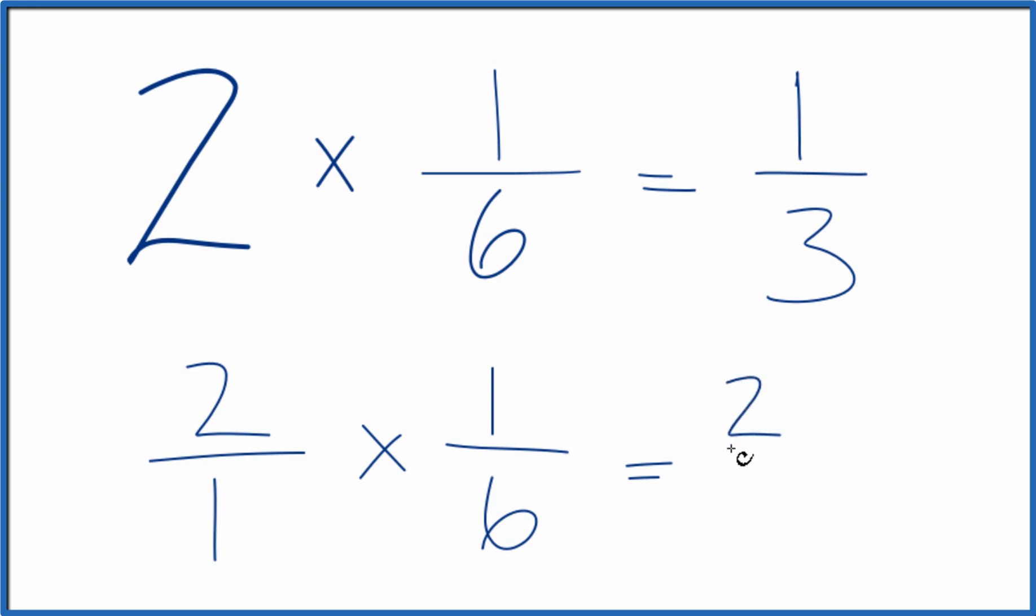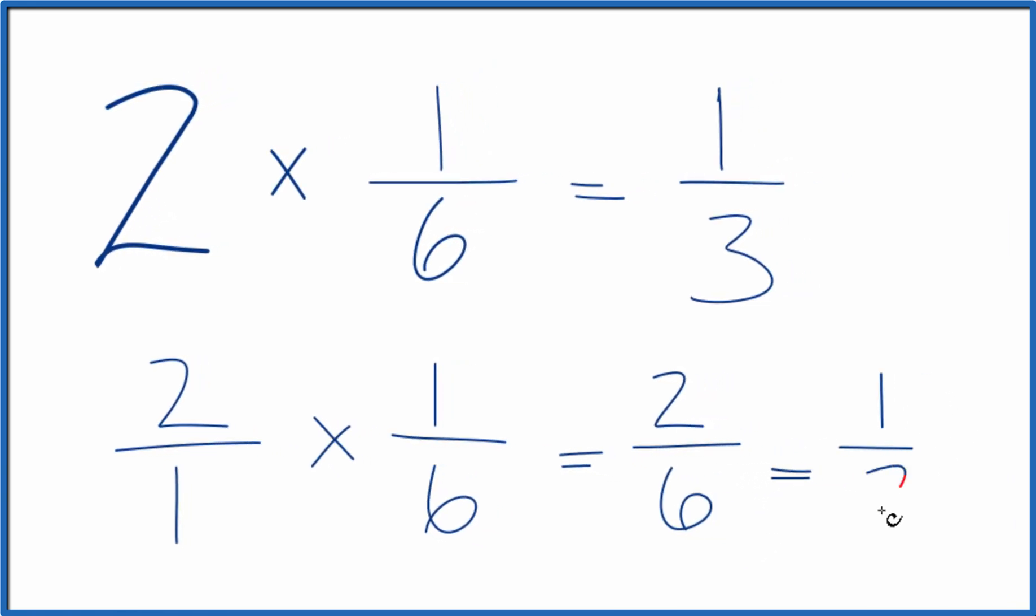Two times one is two. One times six is six, which we can simplify since they're both even, to one-third.